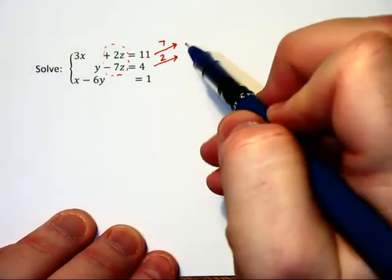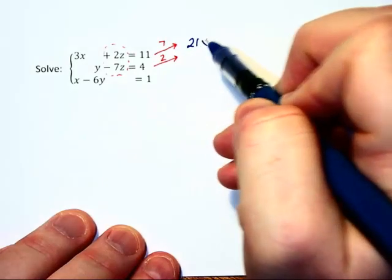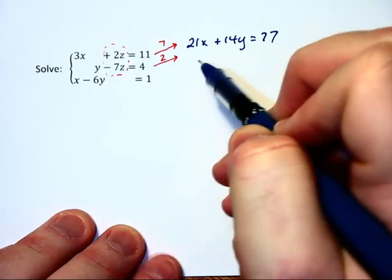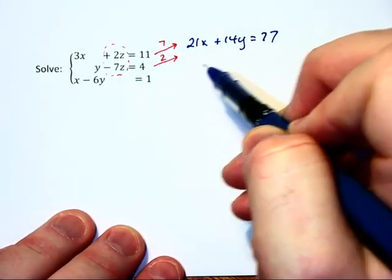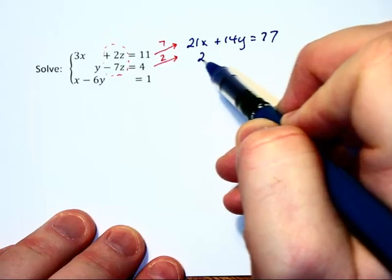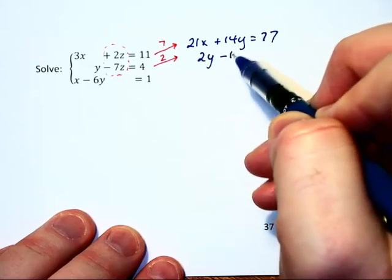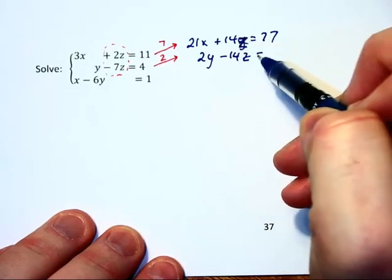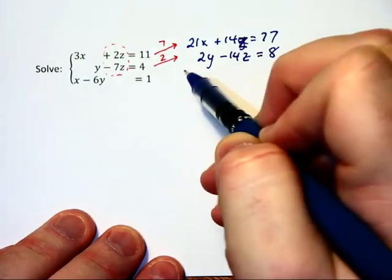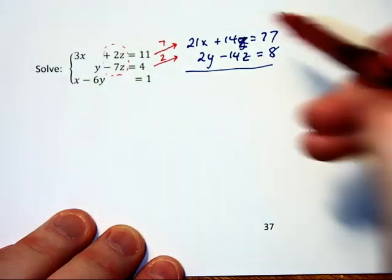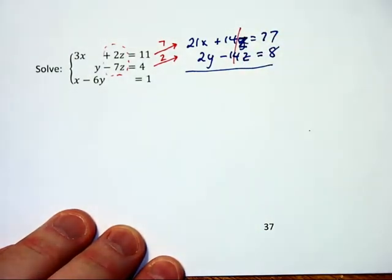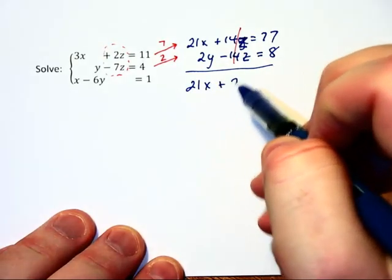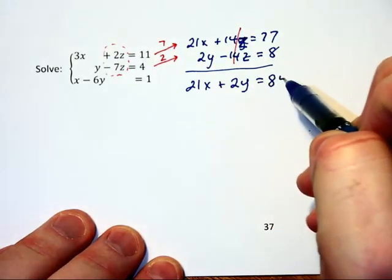That will give me 21x plus 14y is equal to 77. And the second equation will become 2y minus 14z, this should be a z up above there, is equal to 8. Adding down, these 14 z's cancel each other out, and we have left 21x plus 2y is equal to 85.